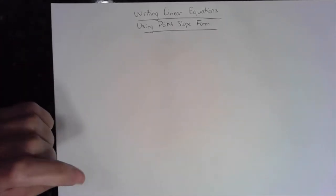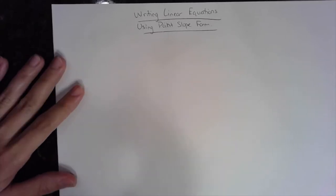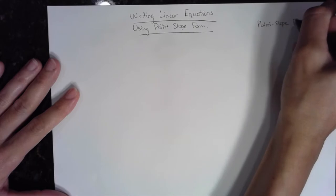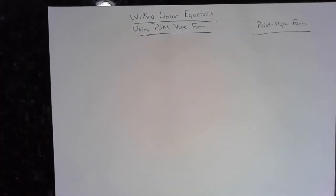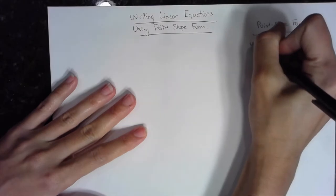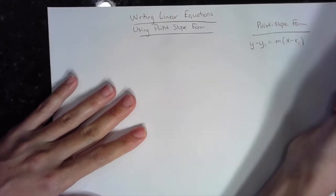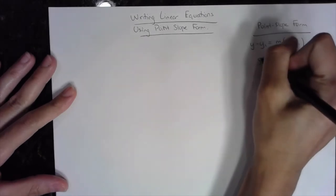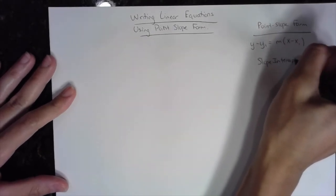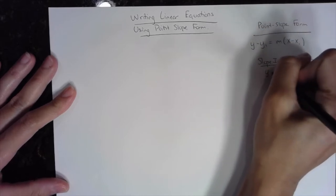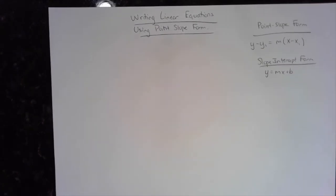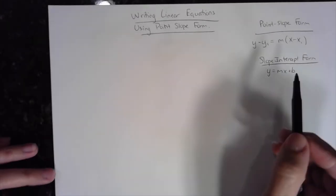I'm going to do three different examples because there are different ways you could be asked to write the equation of a line. Let's review the different forms. Point-slope form uses any point and the slope: y minus y1 equals m times x minus x1, where x1 and y1 are the coordinates of a point and m is the slope. Slope-intercept form, y equals mx plus b, is the most popular — it gives the slope m and the y-intercept b.